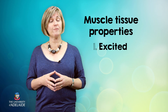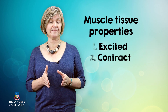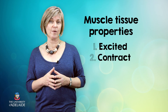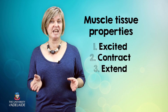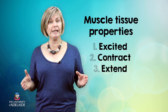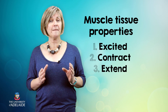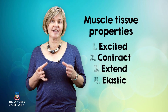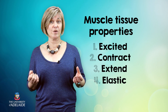They also have to be able to contract, which means they actually shorten in length — a feature only seen in muscle tissue in our body. As well as that, they have to be able to extend, meaning that when subject to a force, they're able to lengthen. And lastly, but just as importantly, muscle tissue must be elastic, meaning it has to be able to return to its original size and shape after finishing its work.